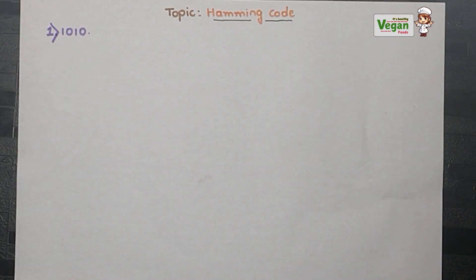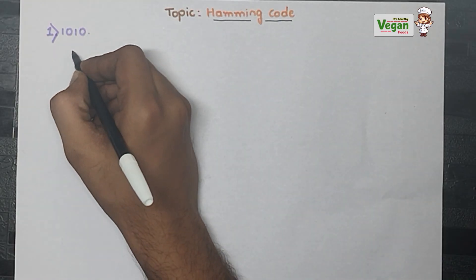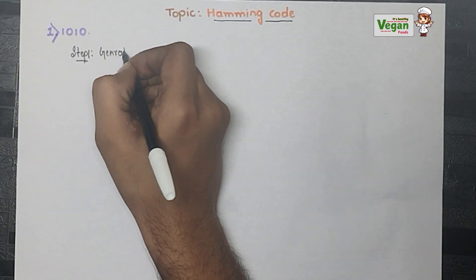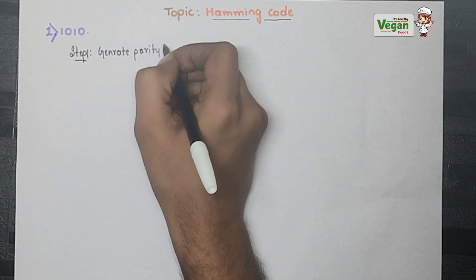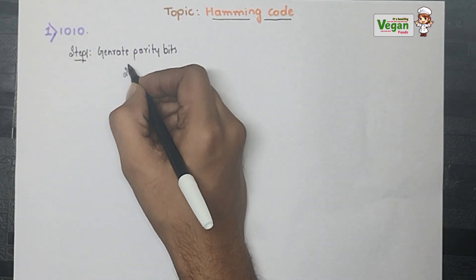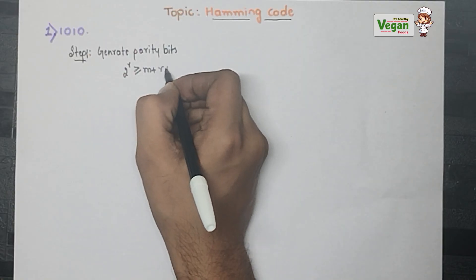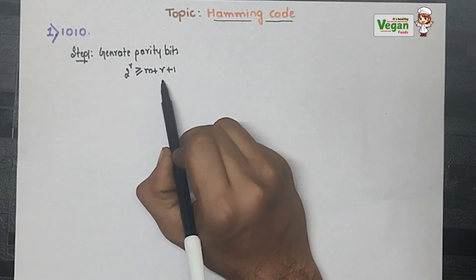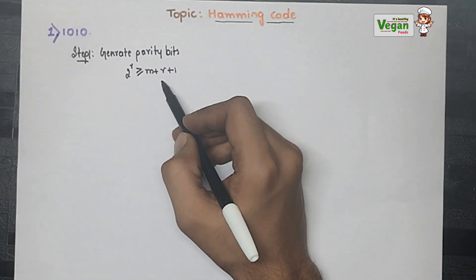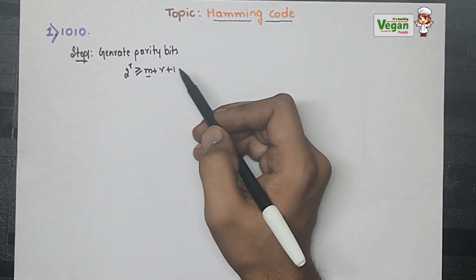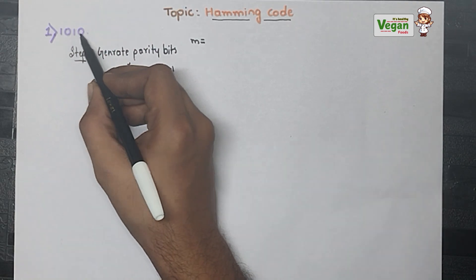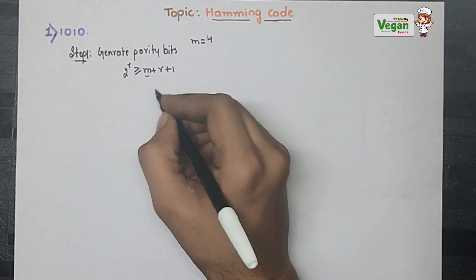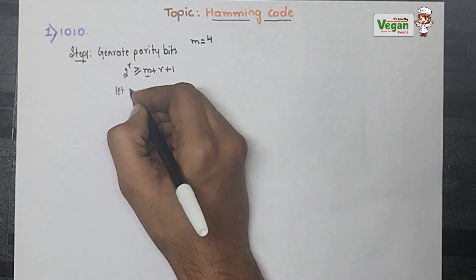Let's discuss by solving a problem. The first problem is 1010. Step one is generating the parity bits. The formula is 2^r ≥ m + r + 1. Here, m is the number of data bits given: 1, 2, 3, 4 — so m = 4. We don't know r, so we will apply the trial and error method.